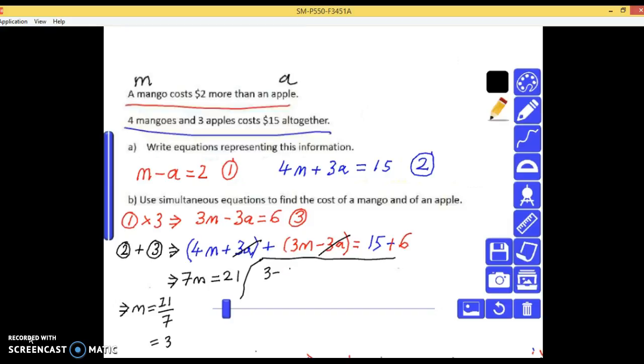So putting this into the first equation, 3 dollars from mango take a equals 2. So that means if we subtract 3 from both sides, negative a equals 2 take 3. So negative a equals negative 1. Those can cancel, those negatives, so a is equal to 1, that was one dollar.